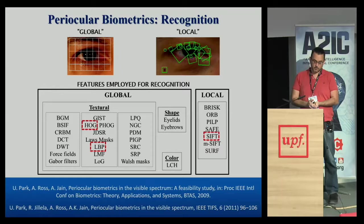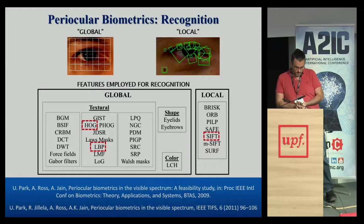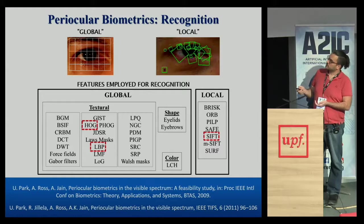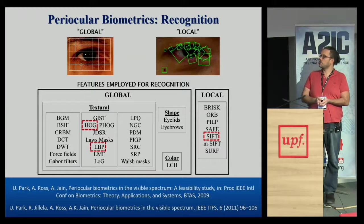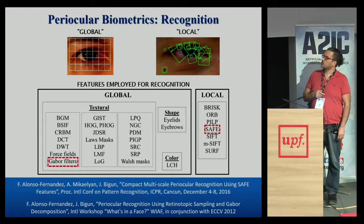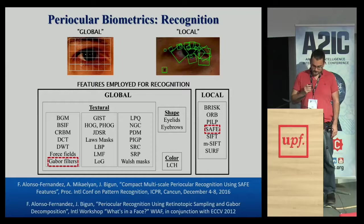Here is a summary of features employed for periocular biometric recognition. The most popular ones — which I've marked in red — are LBPs (Local Binary Patterns), Histogram of Oriented Gradients (HOG), and SIFT keypoints. The earliest papers proposing periocular images for recognition were published in 2009 — relatively recent compared to face, iris, and fingerprint research which spans several decades. We have also contributed to this table with features we proposed and published.